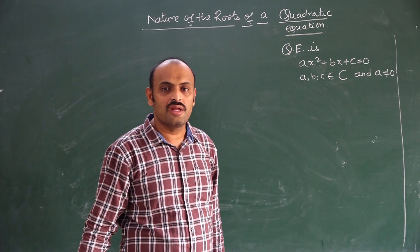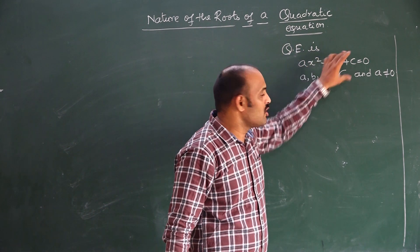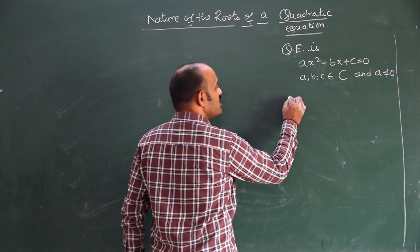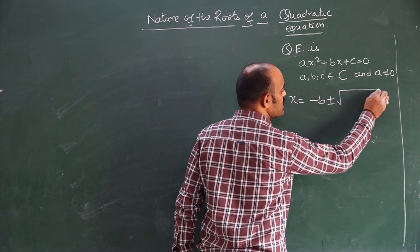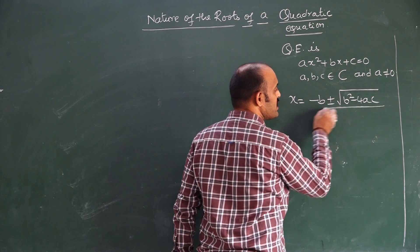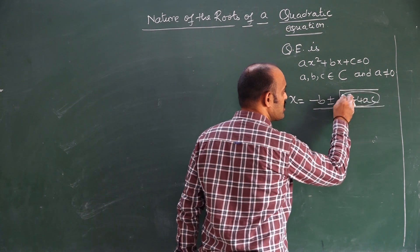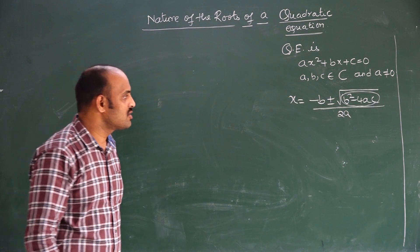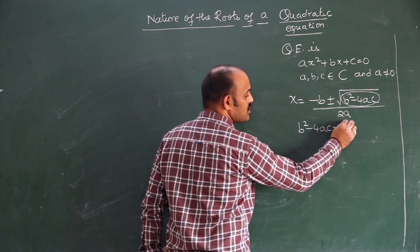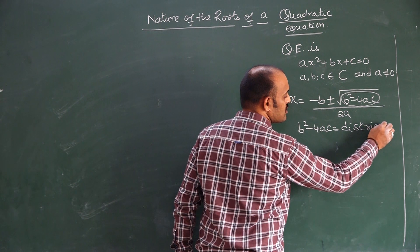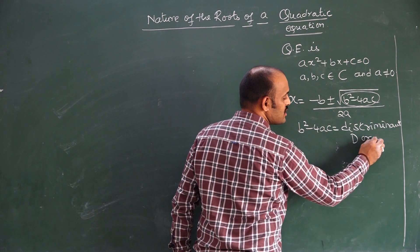Complex numbers means they can be real and imaginary. So all three coefficients can belong to complex numbers. Now, according to the quadratic formula, x = (−B ± √(B²−4AC)) / 2A. Whatever the term we have under the root is called the discriminant. It is denoted as D or delta.